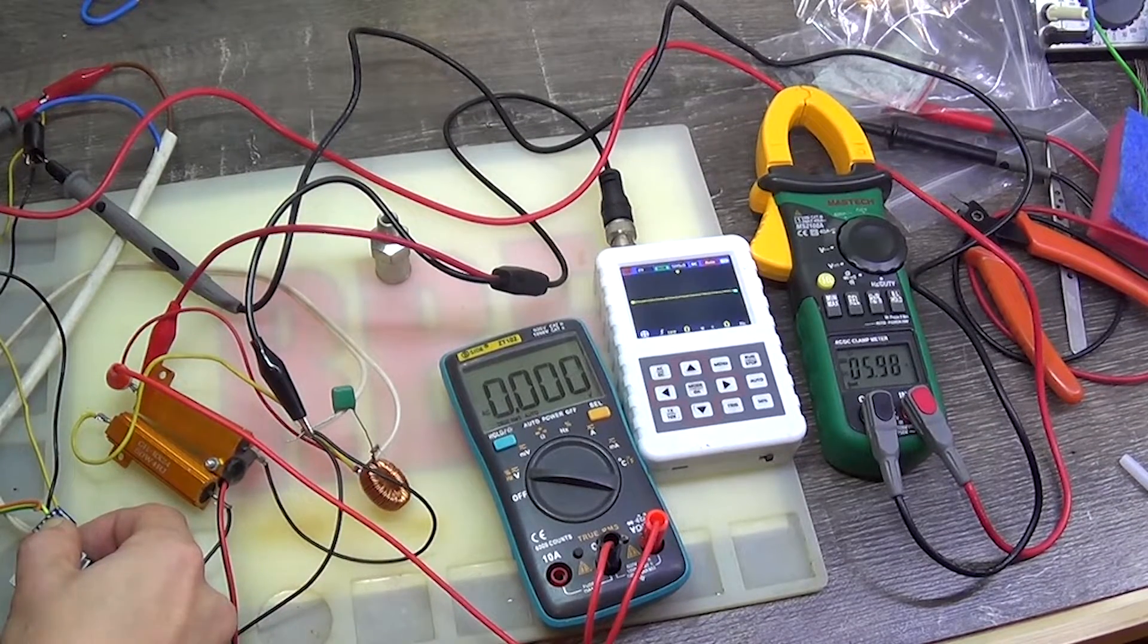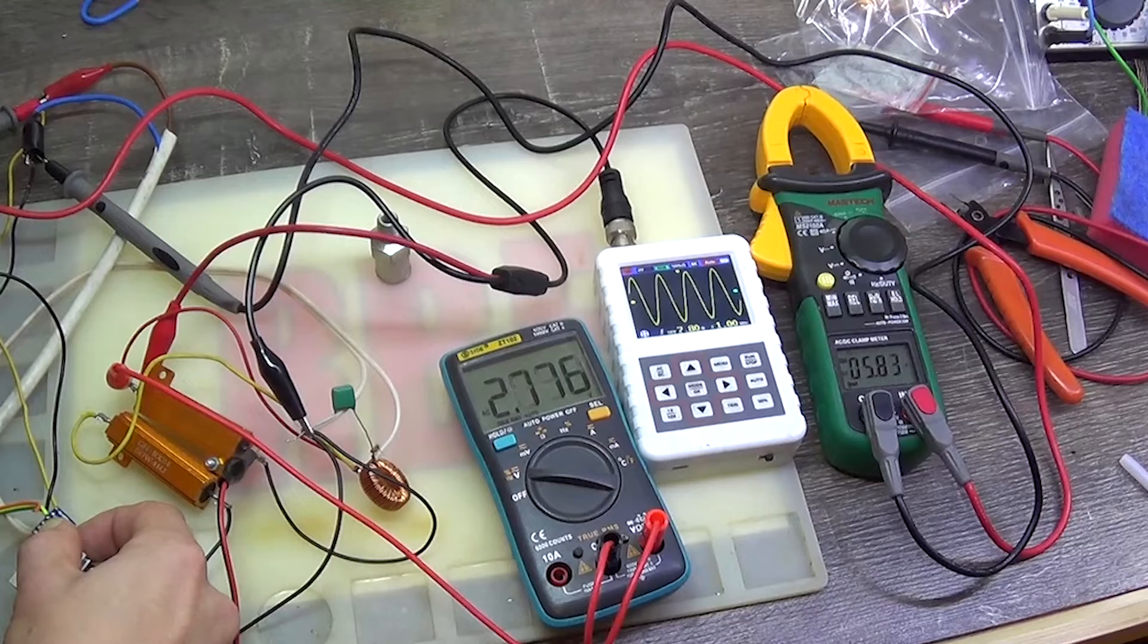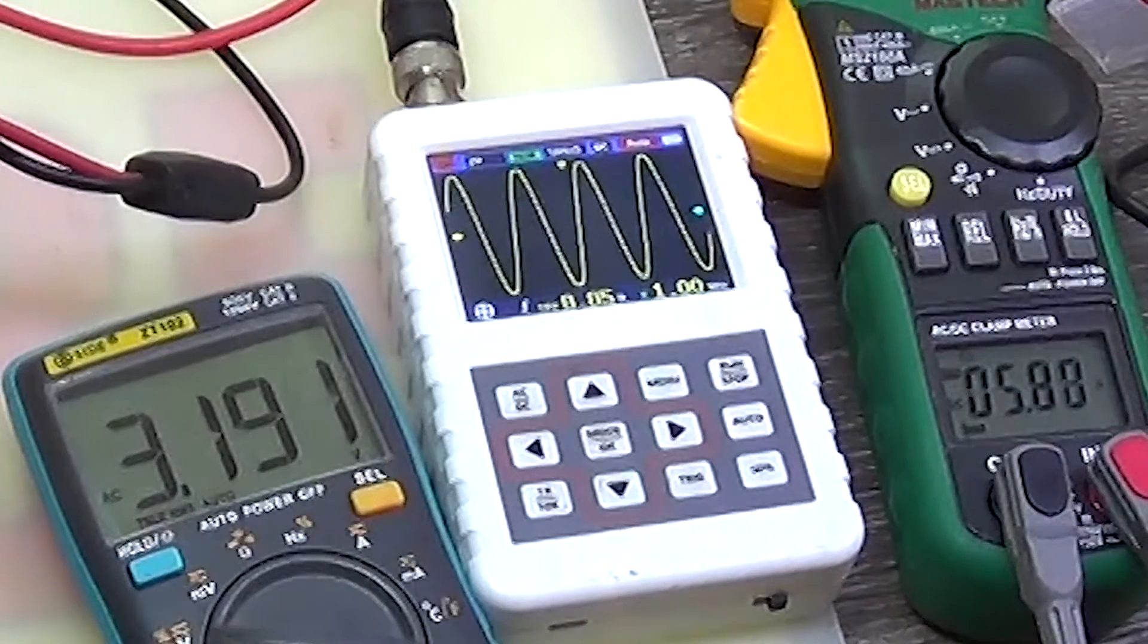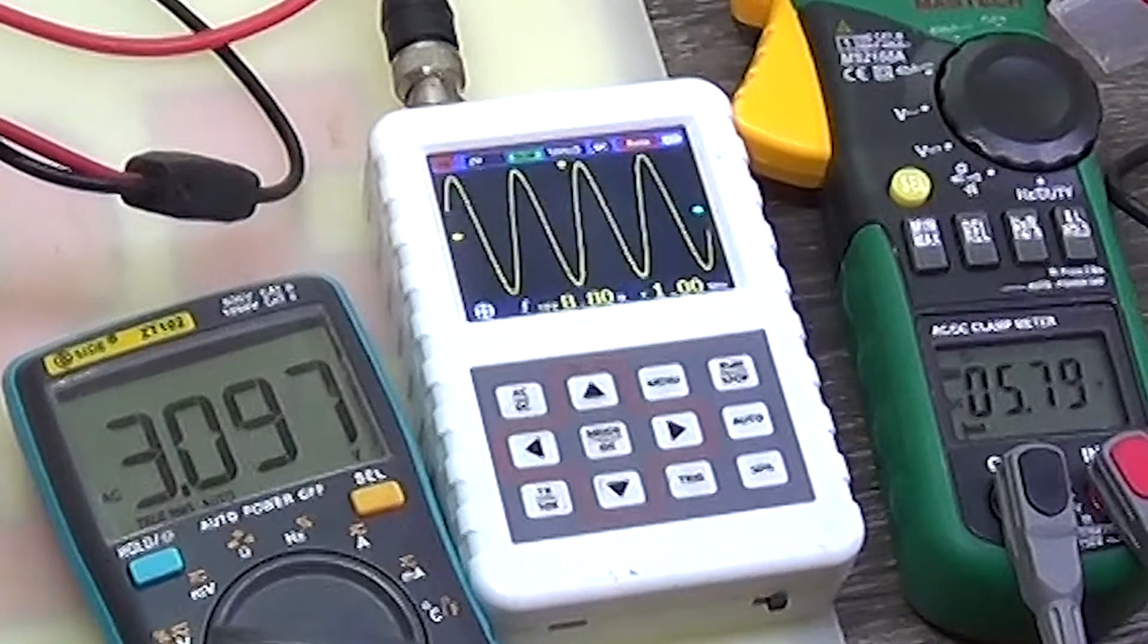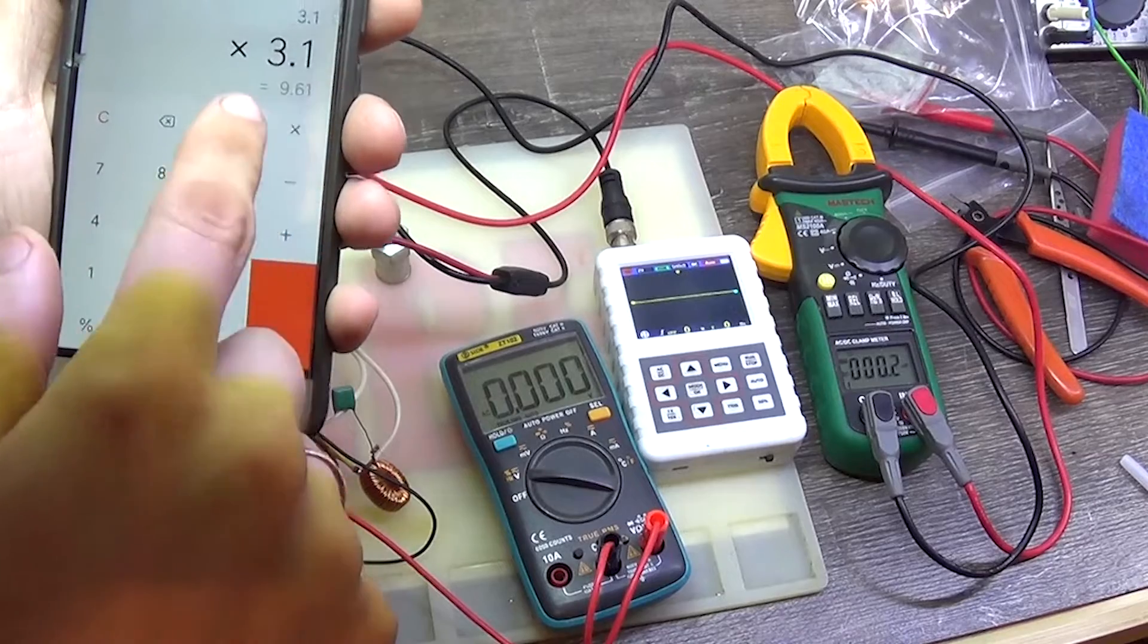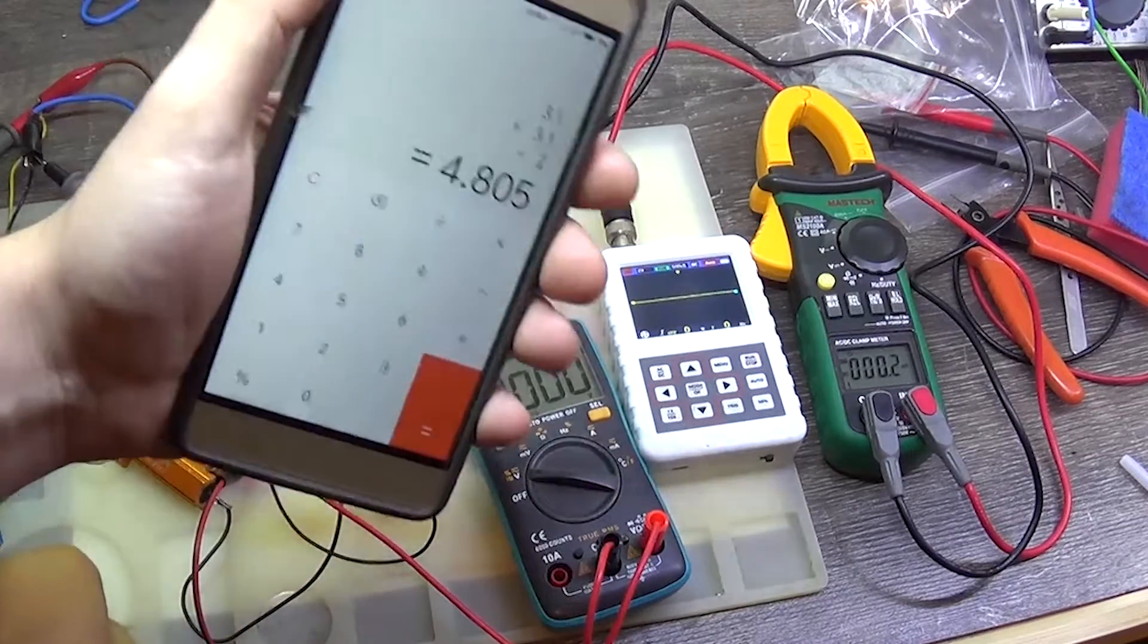I'm increasing the voltage to 6 volts. Let's see the distortion. The output is 3.1 volts. A little help from the calculator and we've got almost 5 watts.